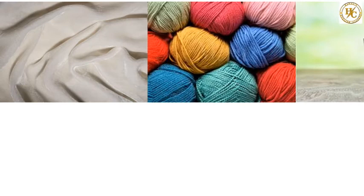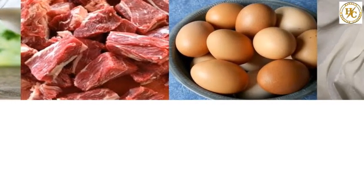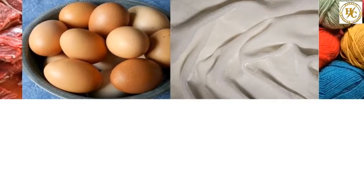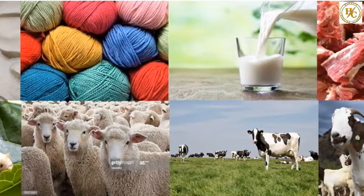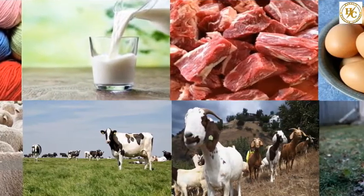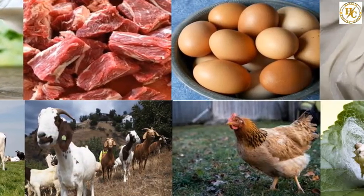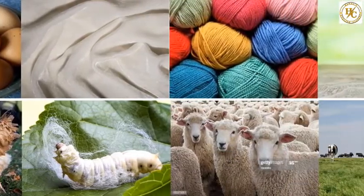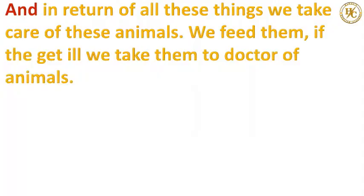We get silk, wool, milk, meat and egg from animals like silkworms, sheep, goats, cows, bulls and hens. And in return of all these things, we take care of these animals.